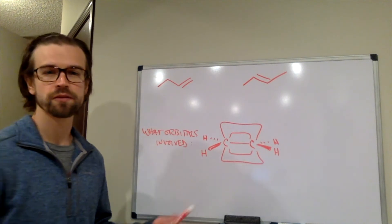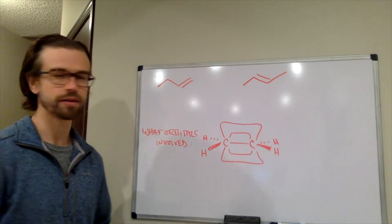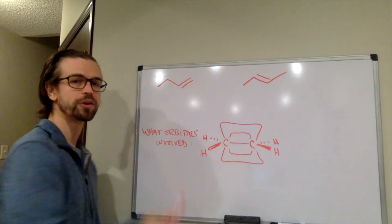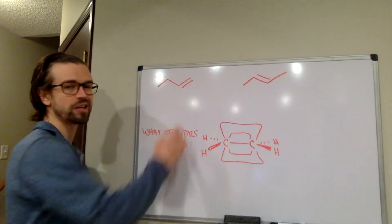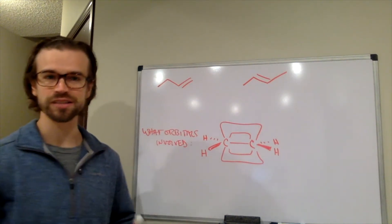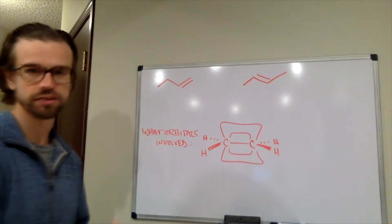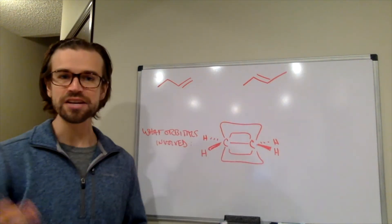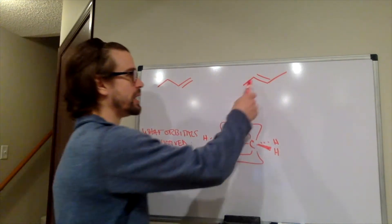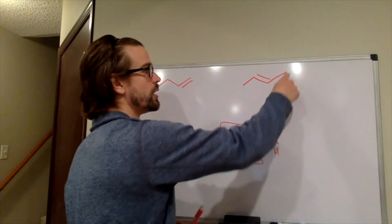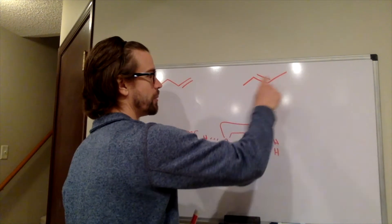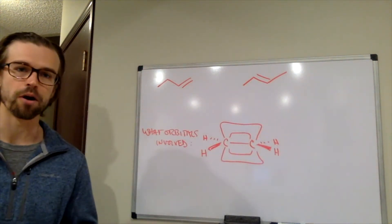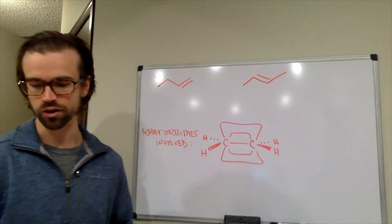We have two different alkenes here. I put both of them up there because we call them slightly different things. This would be a terminal alkene - we have a carbon chain and the alkene ends that chain. This here would be an internal alkene - the alkene is internal to the carbon chain, we have carbons on either side that are not part of that alkene.